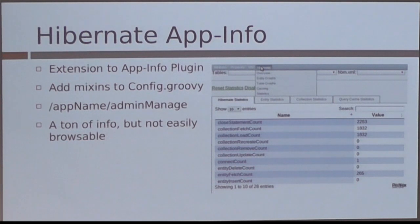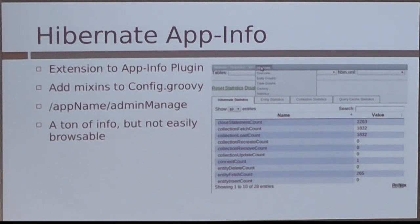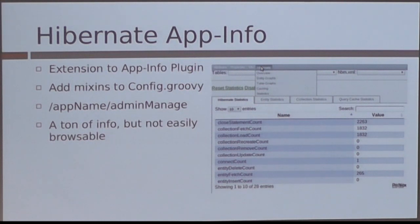The first plugin is Burt's Hibernate App Info plugin. It's really pretty good. There's also a regular app info plugin. It gives you a lot of data, but it's not really easily accessible — you navigate to a different URL to access it, there are a lot of tables, and you have to do a lot of click-throughs. There's a lot of good information in there, but it's just not super easily accessible.